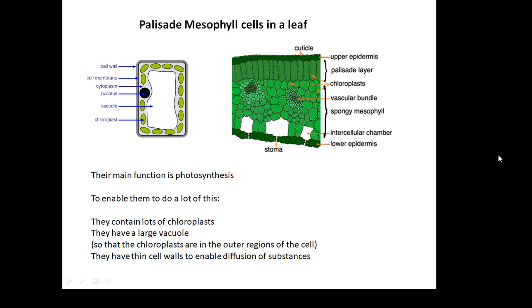In the chloroplasts, they have a large vacuole. And because of that, the chloroplasts are in the outer regions of the cell, which is where they're going to get exposed to sunlight. And they have thin cell walls to enable diffusion of substances. So these are leaf cells or palisade mesophyll cells.